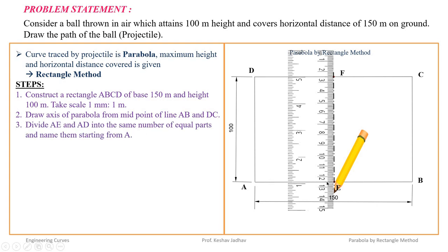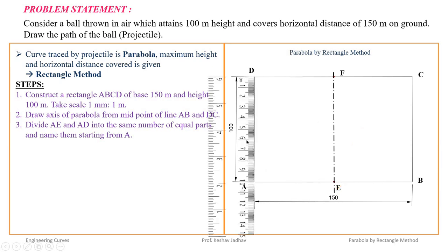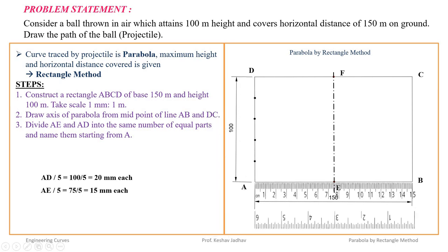Now divide AE and AD into an equal number of parts — say 5. AD is equal to 100 mm, so divide it into 5 parts at 20 mm each. AE is equal to 75 mm, so divide it into 5 parts at 15 mm each.